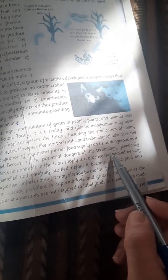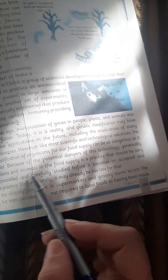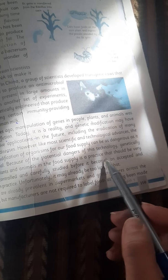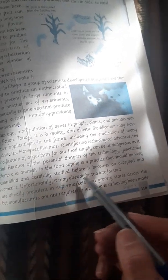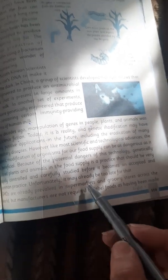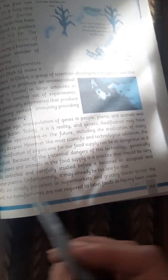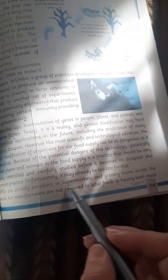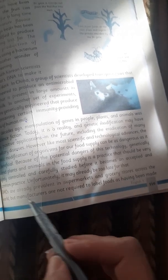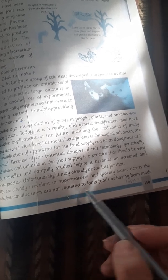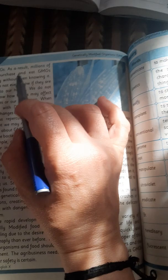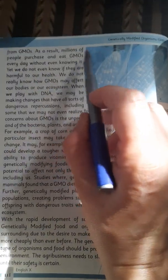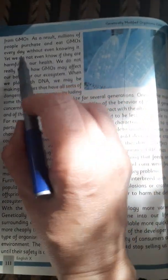Because of the potential dangers of this technology, genetically altered plants and animals in the food supply is a practice that should be very tightly controlled and carefully studied before it becomes an accepted and common practice. Unfortunately, it may already be too late for that. GMOs are already prevalent in supermarkets and grocery stores across the world, but manufacturers are not required to label foods as having been made from GMOs.